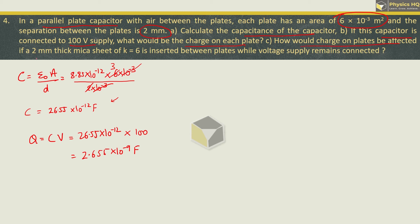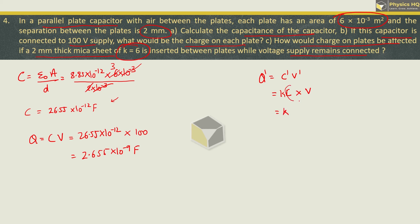How much will the charge on the plates be affected if a 2 mm thick mica sheet with K equal to 6 is inserted between the plates while voltage supply remains constant? In this case, new charge equals new capacitance into voltage. Voltage remains the same. New capacitance equals old capacitance into K. So new charge equals K times C into V, which is K times the old charge.